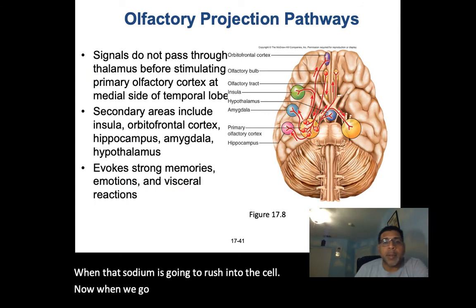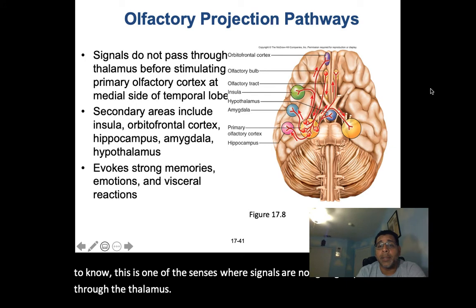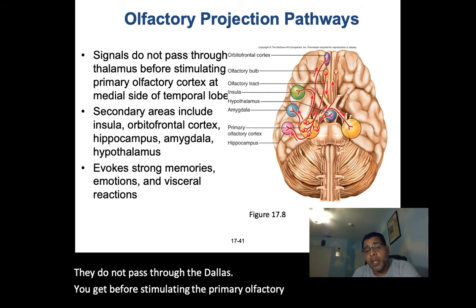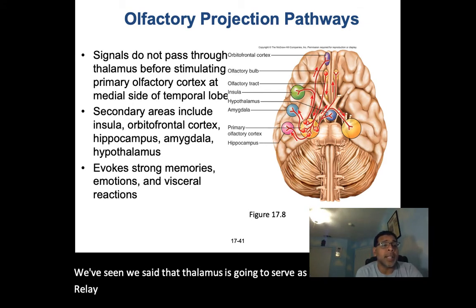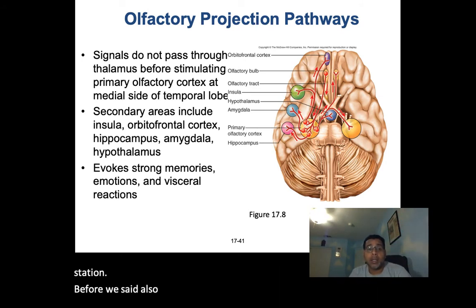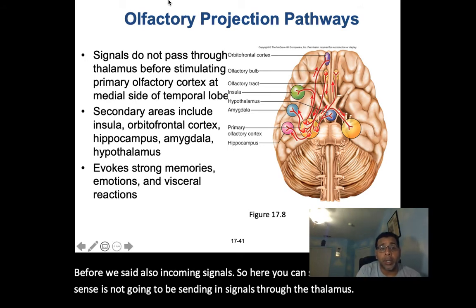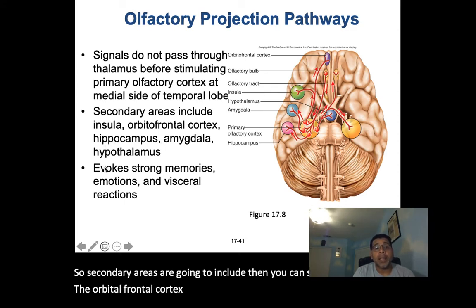One important thing about smell: signals do not pass through the thalamus before stimulating the primary olfactory cortex. Everything else we've seen uses the thalamus as a relay station, but this is one sense that bypasses it.